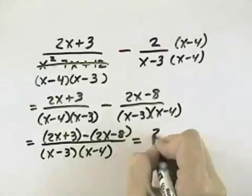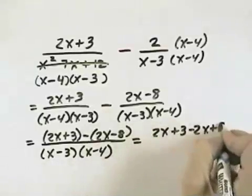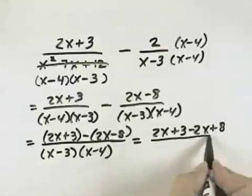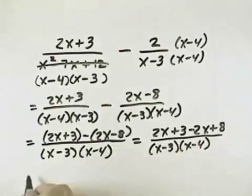Distributing the negative sign in the numerator, we get 2x plus 3, but we get minus 2x and plus 8 when we distribute that negative through. Our denominator is x minus 3 times x minus 4 as the common denominator.